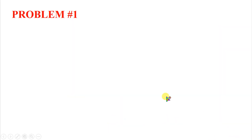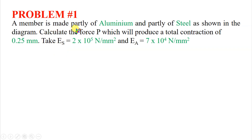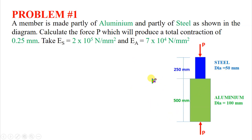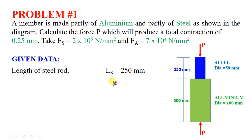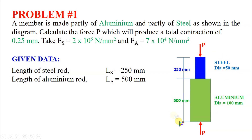Let's work out a problem. A member is made partly of aluminium and partly of steel. Calculate the force P which will produce a total contraction of 0.25 mm. Take ES = 2×10⁵ N/mm² and EA = 7×10⁴ N/mm². In the diagram, the blue color represents the steel part and the green color represents the aluminium part. The length of steel is 250 mm, the length of aluminium is 500 mm, the diameter of steel is 50 mm, and the diameter of aluminium is 100 mm.